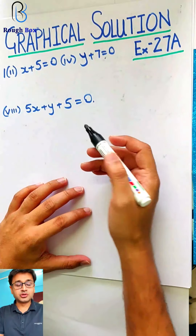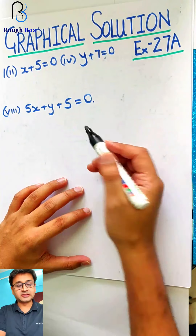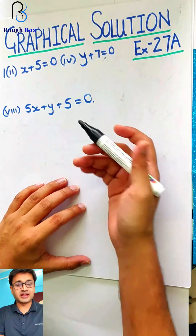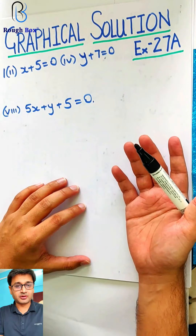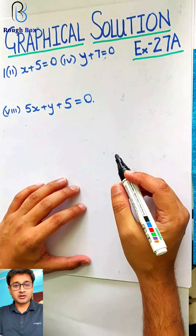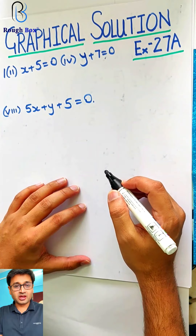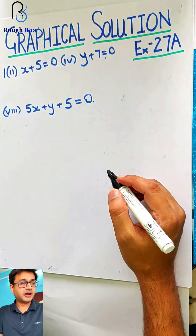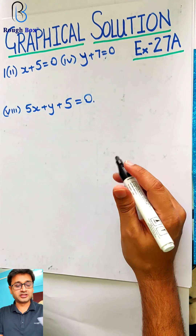You're going to enjoy this topic, I'm 100% sure. What you're supposed to do in the first part is simply draw these lines on the graph paper. It should be a piece of cake for you by now. So come on, let's begin.